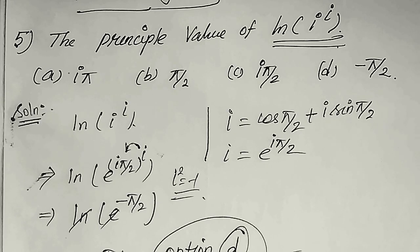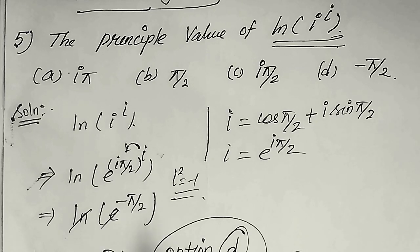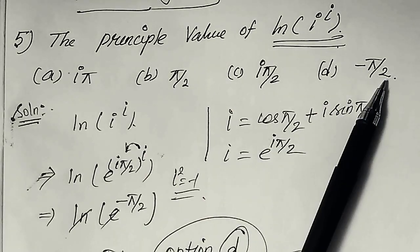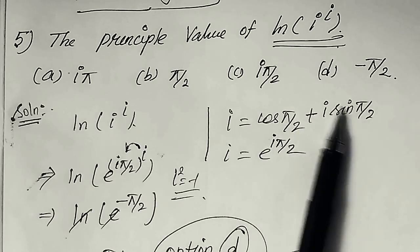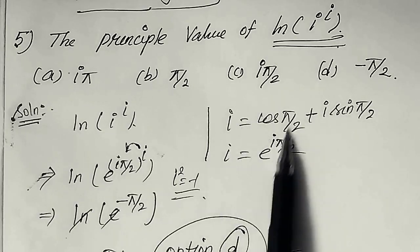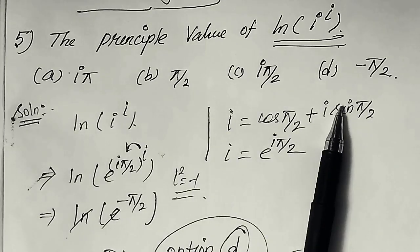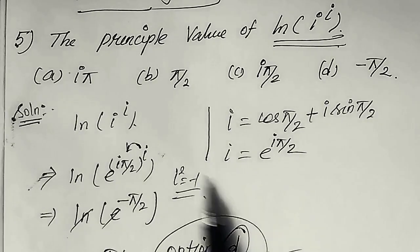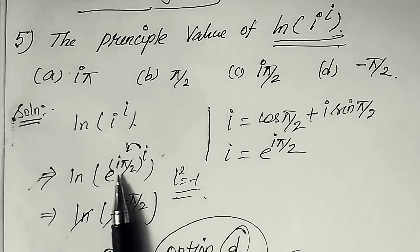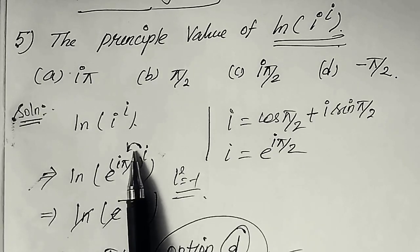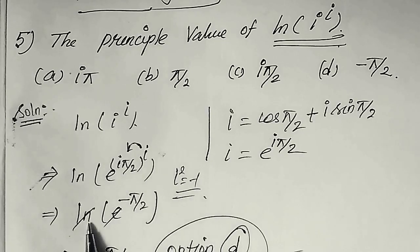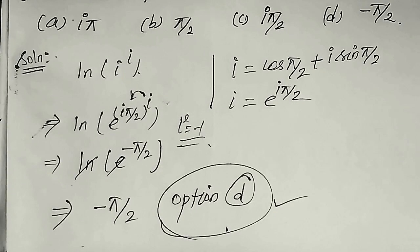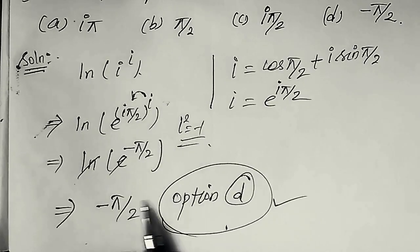Next: find the principal value of ln(i^i). This uses complex variable methods. We write i = cos(π/2) + i·sin(π/2) = e^(iπ/2). Substituting: i^i = (e^(iπ/2))^i = e^(i²·π/2) = e^(-π/2). Taking the natural log, ln cancels e, giving the final answer: -π/2.